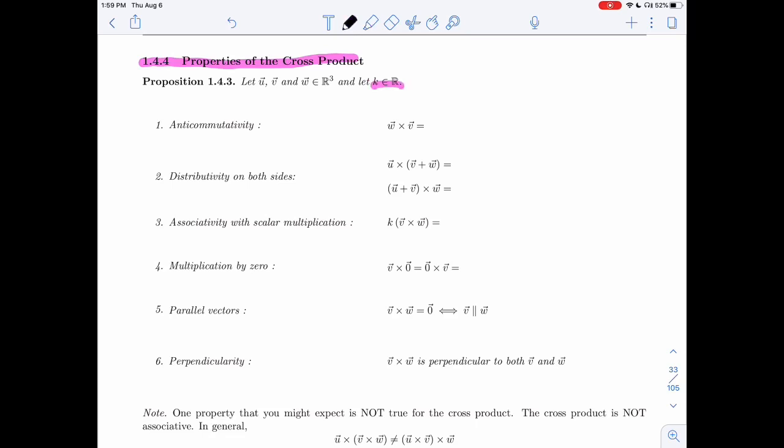and I have a real number k. First property of the cross product, which we've seen already, is if you want to switch the order, you're going to have to put a minus. So w cross v is minus v cross w, and that's called anti-commutativity.